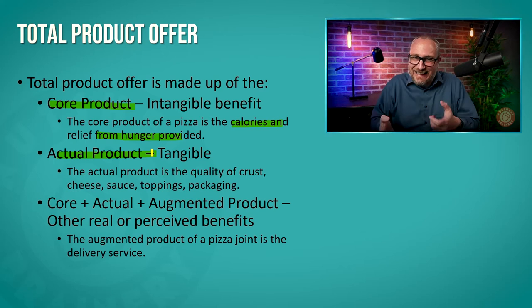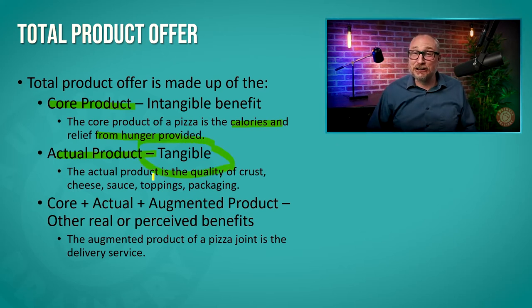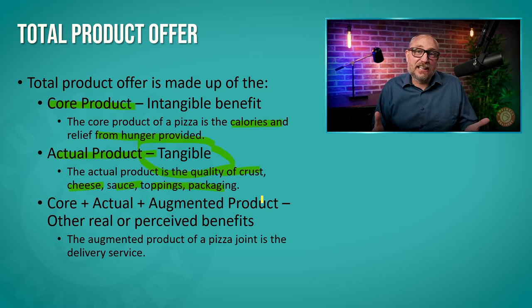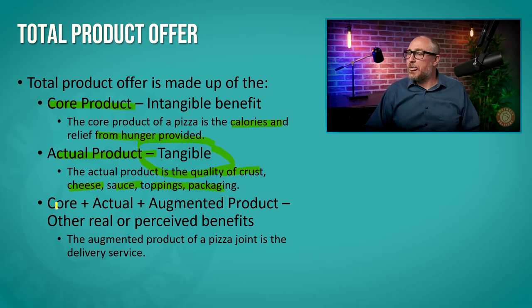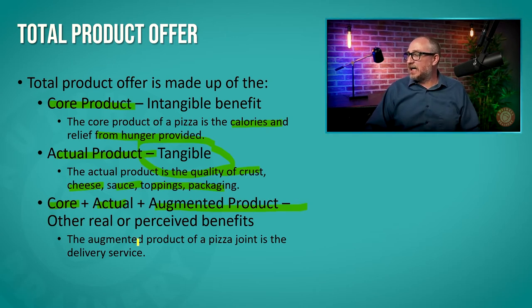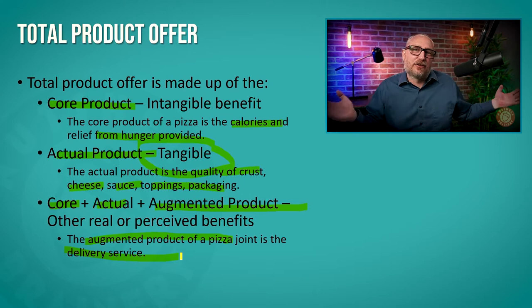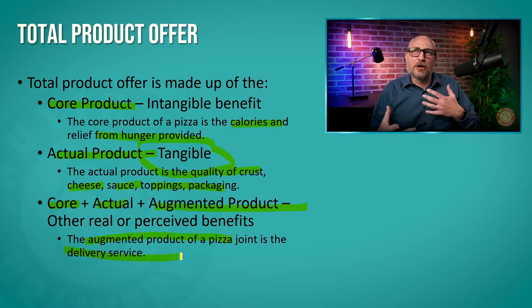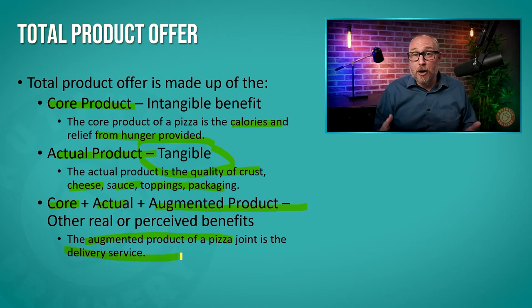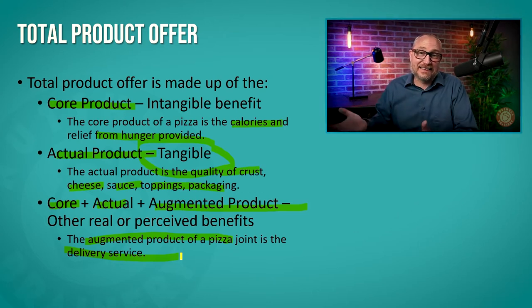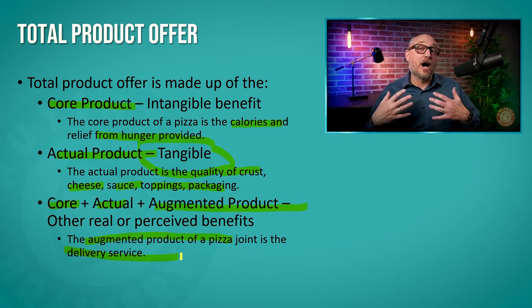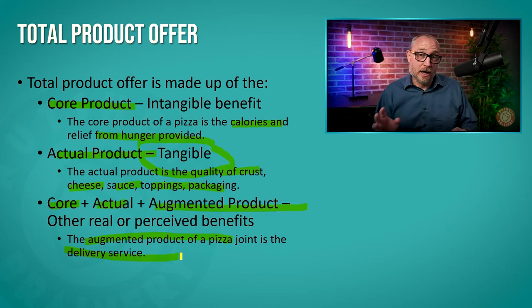Then we have the actual product — the tangible thing we can touch. For pizza, that's the crust, cheese, sauce, toppings, and the packaging. But then we combine the core with the actual plus the augmented product, such as the delivery service, the image of the pizza company, or the ambiance of their establishment. These things augment the value proposition of the product, and this will be important when we talk about pricing.